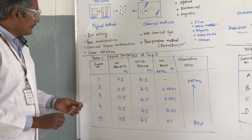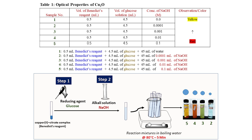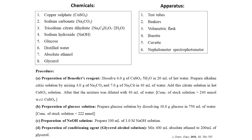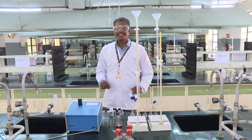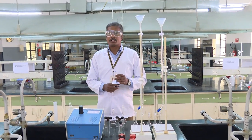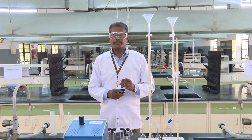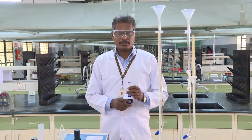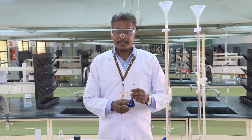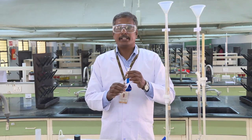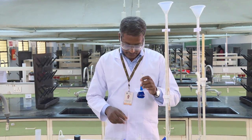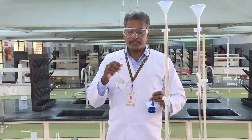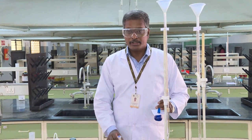What we need is a Benedict solution — which is a bluish color — a glucose solution, and sodium hydroxide solution of various concentrations. Let us start the first part of the copper oxide nanoparticle synthesis involving optical measurement by naked eye. For that we need a stock solution of Benedict, sugar solution as reducing agent, and sodium hydroxide.